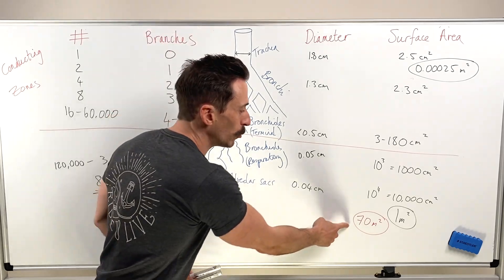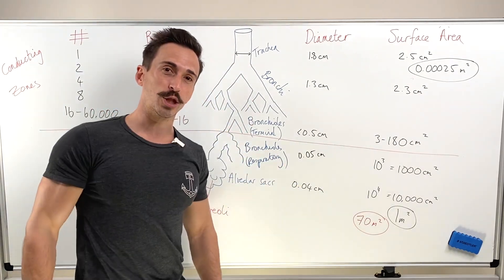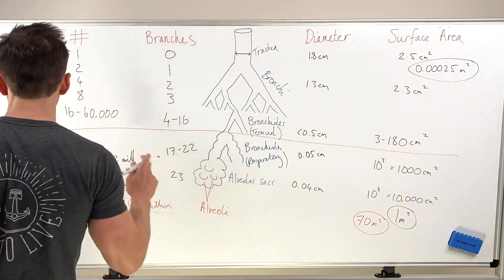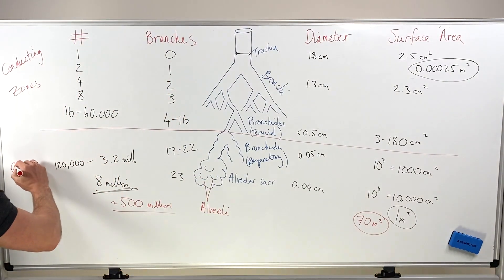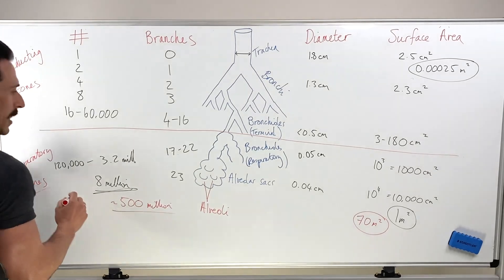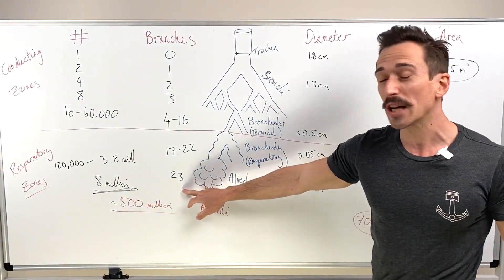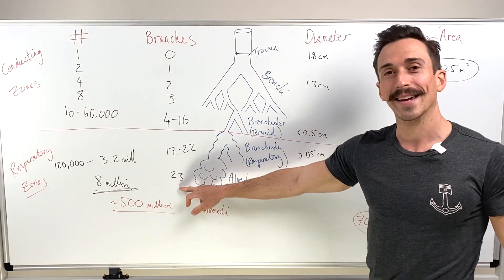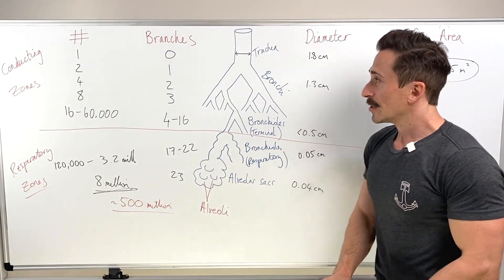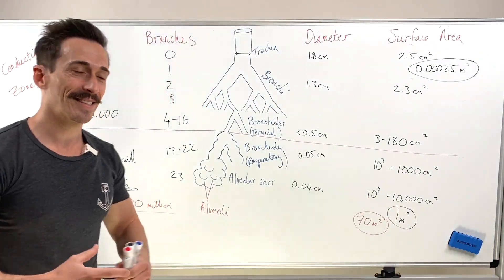And it's because of this huge tennis court size surface area that we can exchange so much gas, so much oxygen, so much carbon dioxide. And again, this is called our respiratory zones. So anywhere in the respiratory zones, you can exchange gas. That actually means that you don't even need to wait till we get to the 23rd branching. You can exchange gases at the 17th branching all the way to the 23rd branching. So I hope this helps. This is the respiratory tree, and I hope it makes sense.